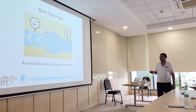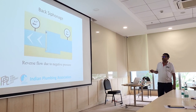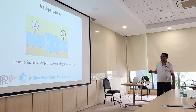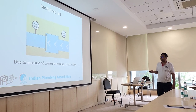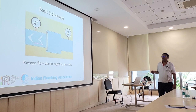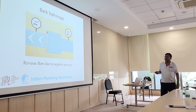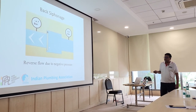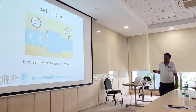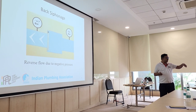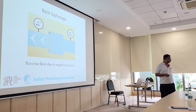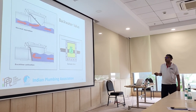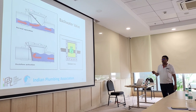Back siphonage is the reverse flow due to negative pressure. In the earlier case it was back pressure — say 1 bar vs. 3.5 bar. Here it is back siphonage. You have a wall and probably a flap which is not allowing the trap seal to blow out. This is the backwater wall.